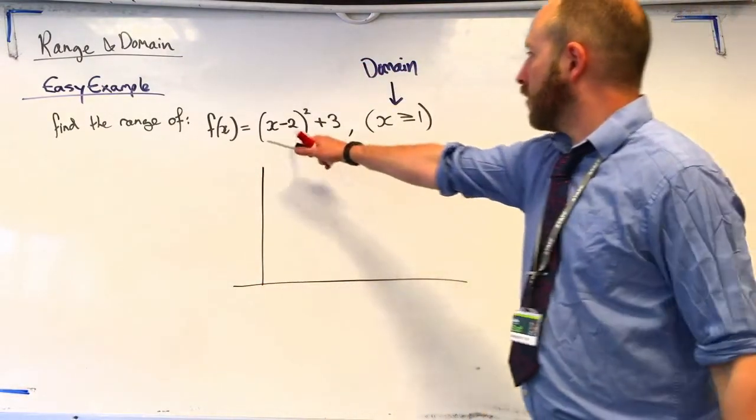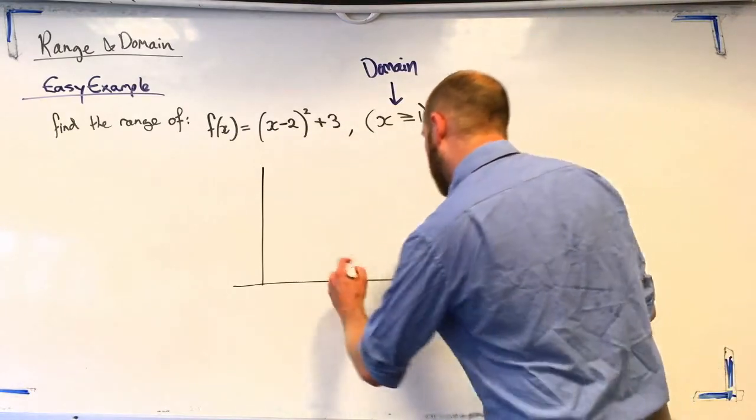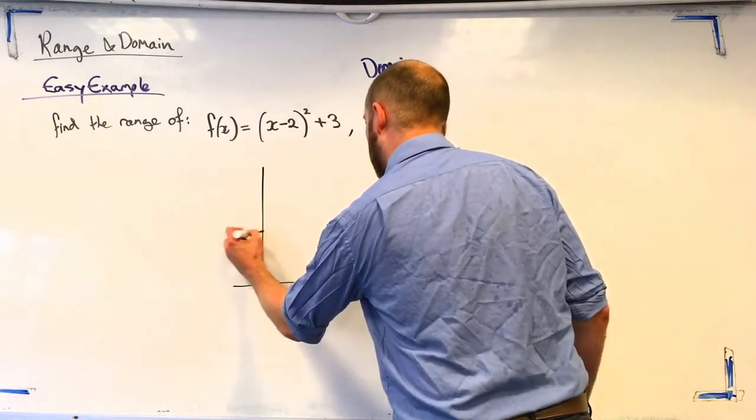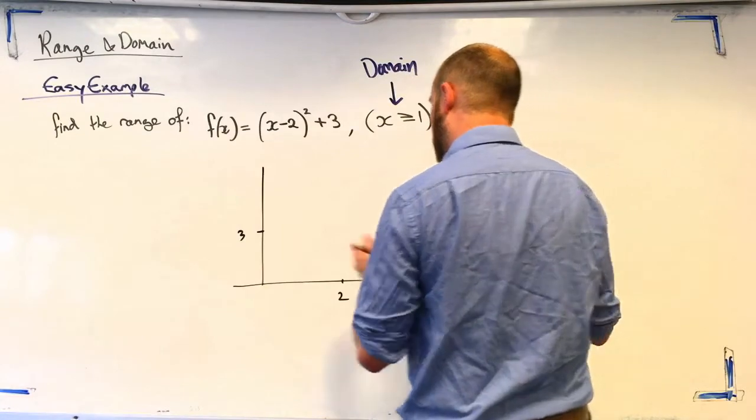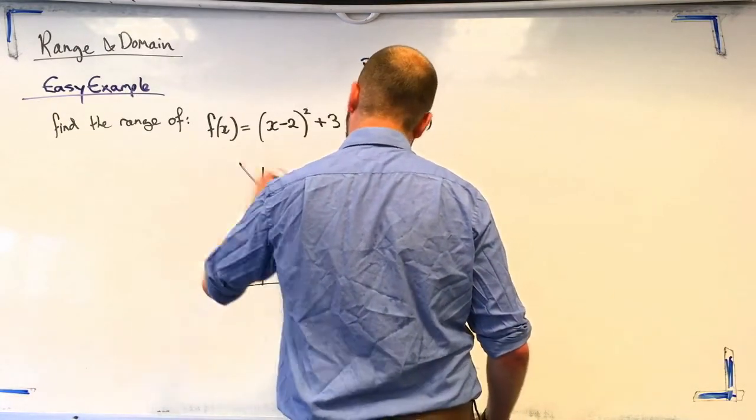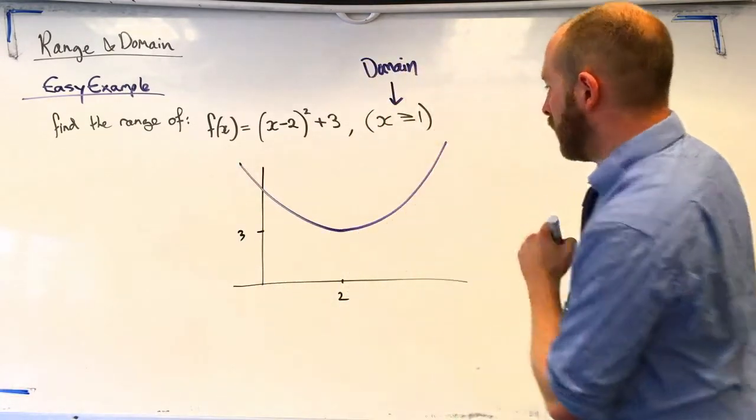So, we've got a minimum point at 2, 3. So, let's put that in as well. So, there's 2. That should be 3. Lovely.